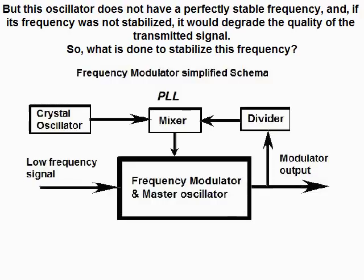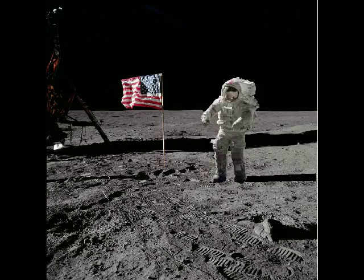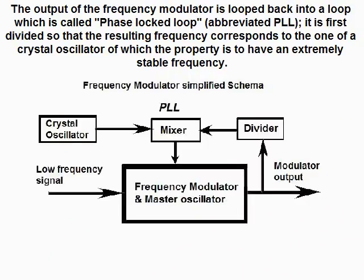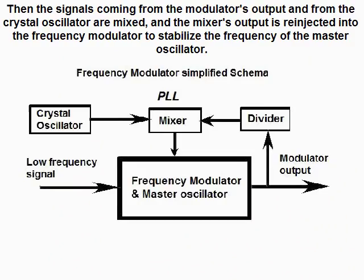So what was done to stabilize this frequency? The output of the frequency modulator is looped back into a loop called a phase-locked loop, abbreviated PLL. It is first divided so that the resulting frequency corresponds to that of a crystal oscillator, which has the property of an extremely stable frequency. Then the signals from the modulator's output and from the crystal oscillator are mixed, and the mixer's output is re-injected into the frequency modulator to stabilize the frequency of the master oscillator.